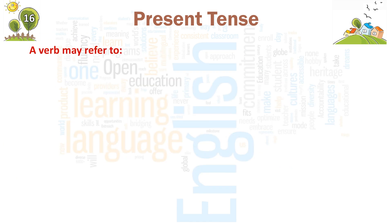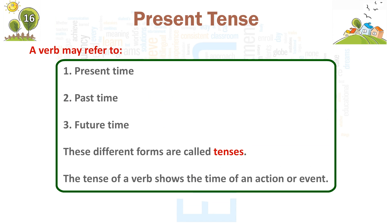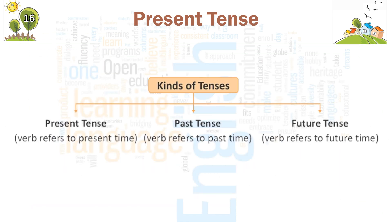A verb may refer to: 1. Present time. 2. Past time. 3. Future time. These different forms are called tenses. The tense of a verb shows the time of an action or event. Kinds of Tenses: Present tense — verb refers to present time. Past tense — verb refers to past time. Future tense — verb refers to future time.